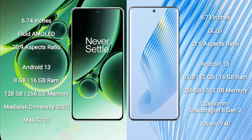OnePlus Nord 3 comes with 8GB or 16GB RAM and 128GB or 256GB internal storage, powered by the MediaTek Dimensity 9000 processor with Mali-G710 GPU.